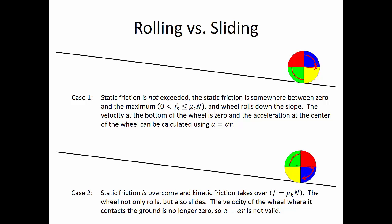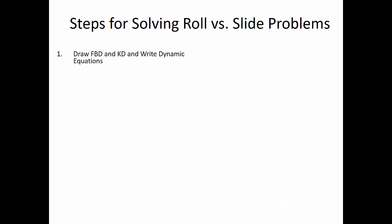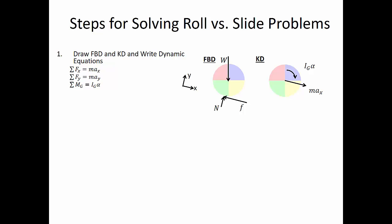So how do we solve these types of problems? There are several steps that we need to take. The first step is that we draw the free body diagram and the kinetic diagram for the object and write the dynamic equations. For our free body diagram, we would have a weight, a normal force, and a friction force represented with just an F, because we don't know what that is at this point. For our kinetic diagram, we have mass times the acceleration of the center of gravity, and a mass moment of inertia times our angular acceleration to represent the rotation. Then we can write our equations.